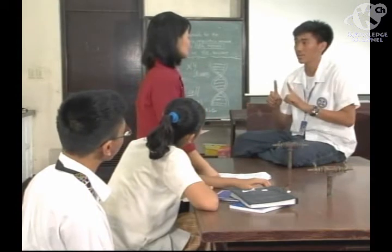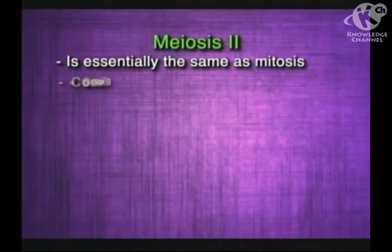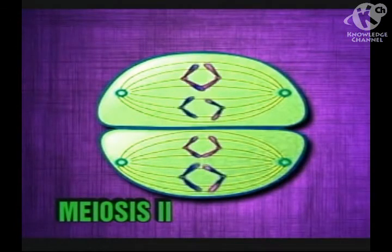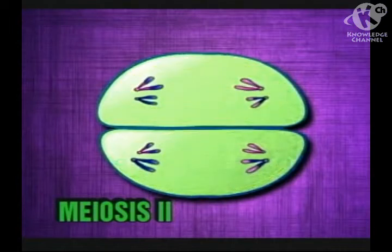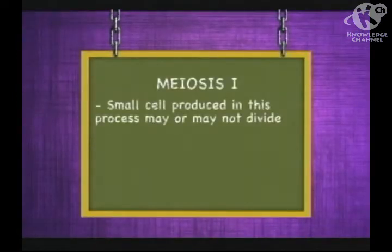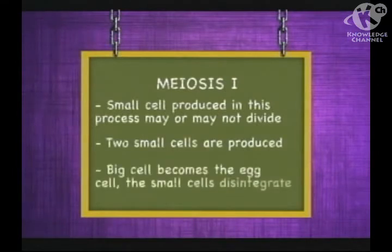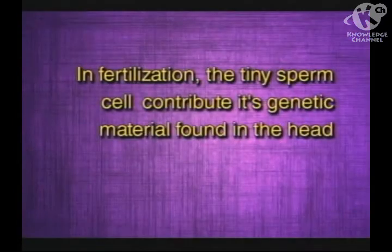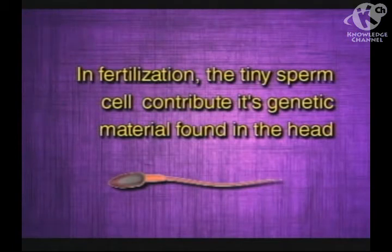After meiosis I, two cells are produced. Meiosis II produces two cells — one big and one small — out of the first big cell. Meiosis II is essentially the same as mitosis; it also consists of prophase, metaphase, anaphase, telophase, and cytokinesis. The only difference is that meiosis II starts with haploid cells. At the end of this process, four new daughter cells are produced, each with a haploid number of chromosomes. The small cell produced from meiosis I may or may not divide. The big cell becomes the egg cell, and the small cells disintegrate. The egg cell contains a lot of stored food used by the growing embryo at the start of its development. In fertilization, the tiny sperm cell only contributes its genetic material found in the head.